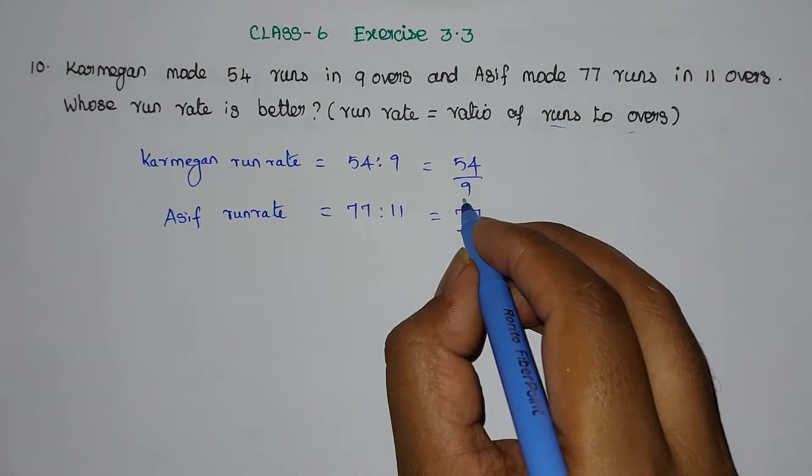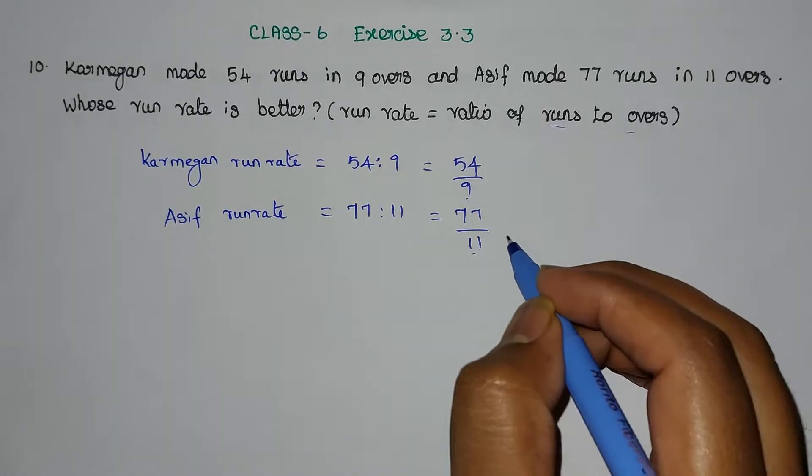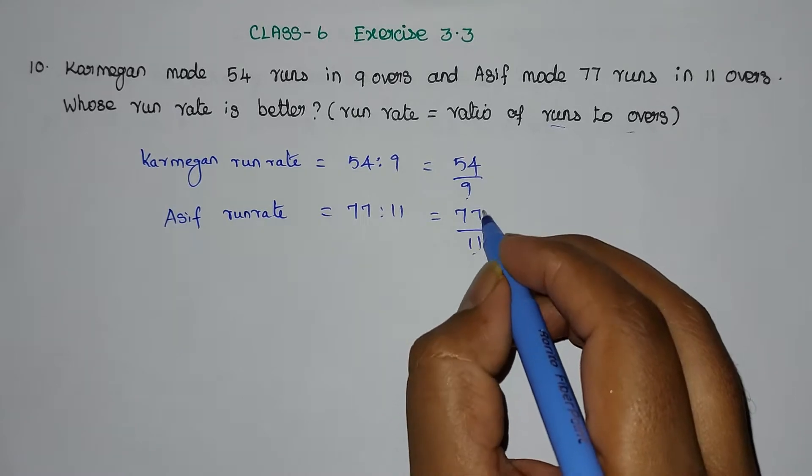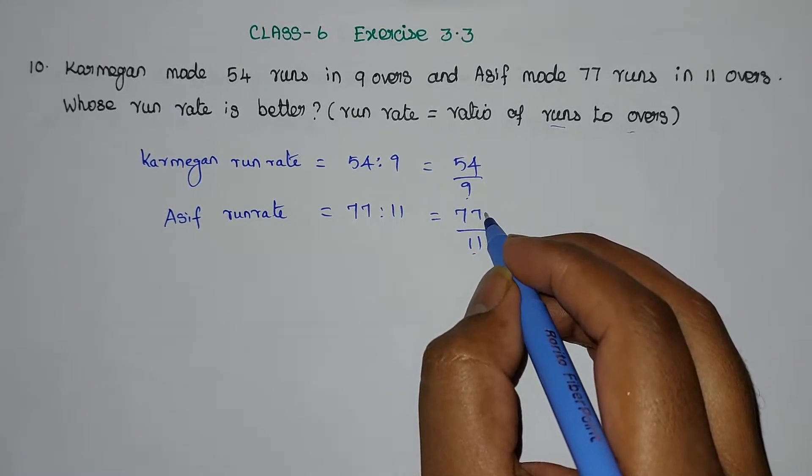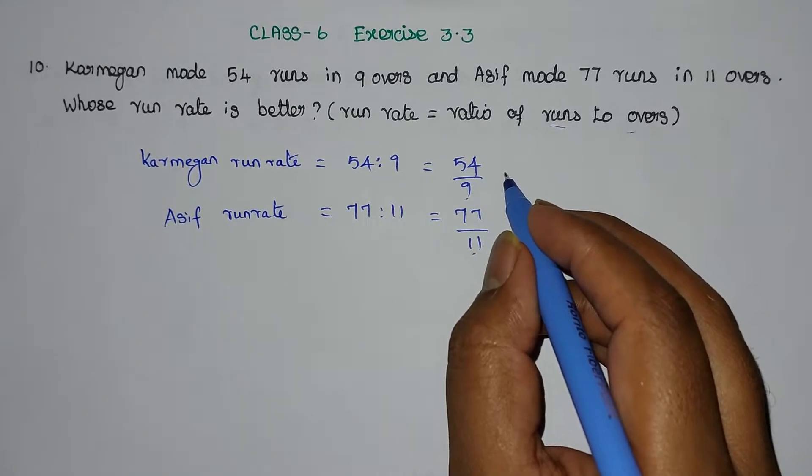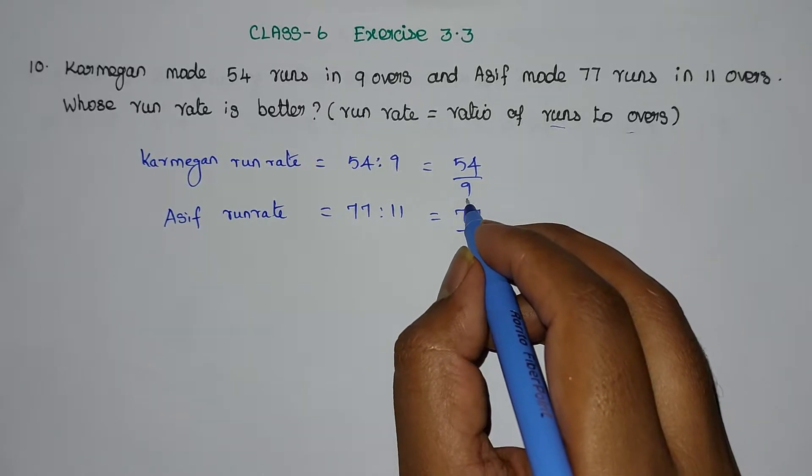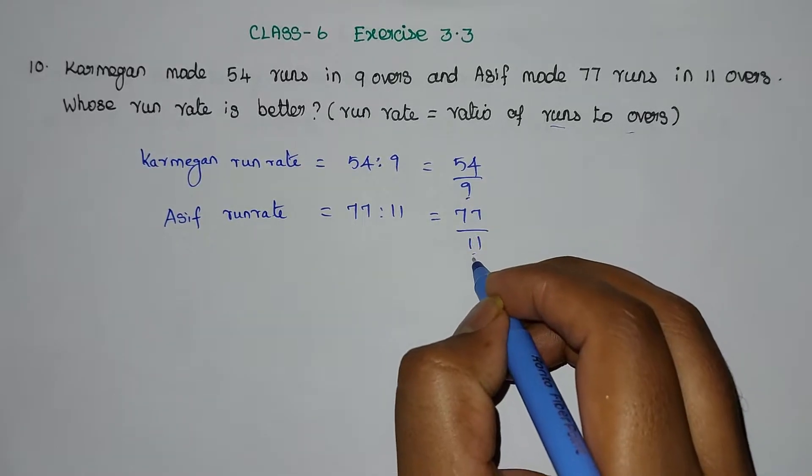Now, the denominators are different. To compare the fractions, we need to make the denominators the same. When the denominators are the same, we can compare the numerators to find out whose run rate is better.